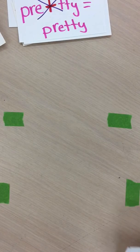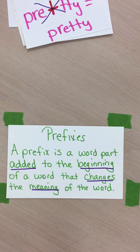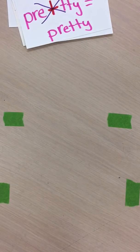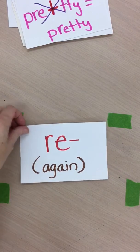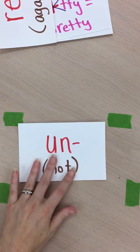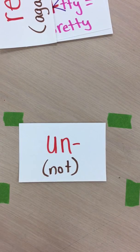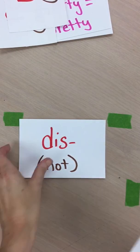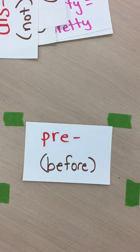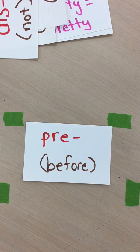So let's recap what our prefixes mean. A prefix is a word part added to the beginning of a word that changes the meaning of a word. Re means again. Un means not. Dis means not. And pre means before. Hope you've learned more about prefixes — see you later!